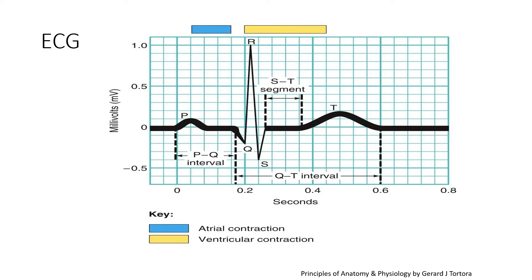Next is the ECG — the electrocardiogram. An electrocardiogram records the electrical signals from the heart to check for different heart conditions. A normal ECG consists of the P wave, QRS complex, and T wave. The P wave indicates atrial depolarization, the QRS complex indicates ventricular depolarization, and the T wave indicates relaxation.